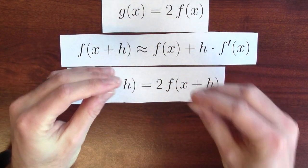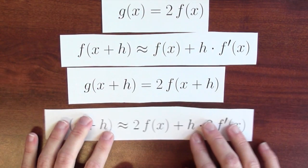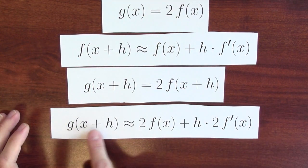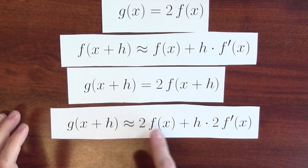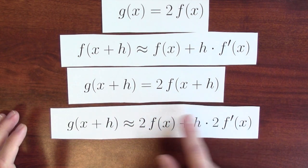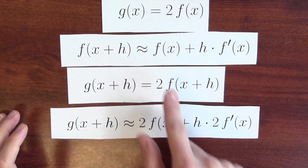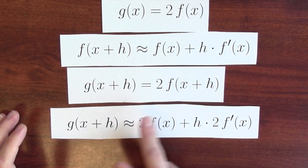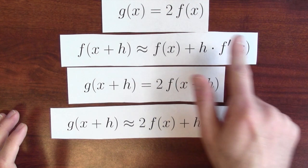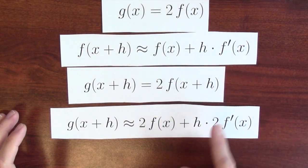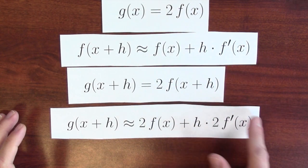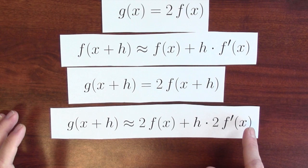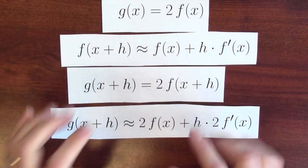So I can combine those two statements together in this statement. g of x plus h is about twice f of x plus h's approximate value. Twice f of x plus twice h times f prime of x, which I've written as h times twice f prime of x.